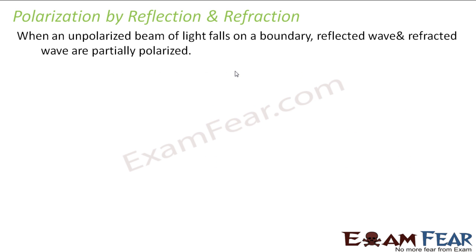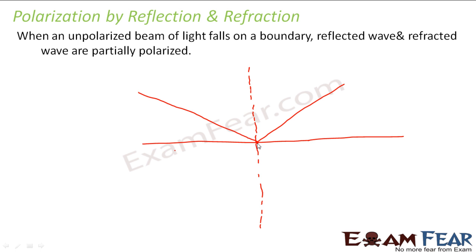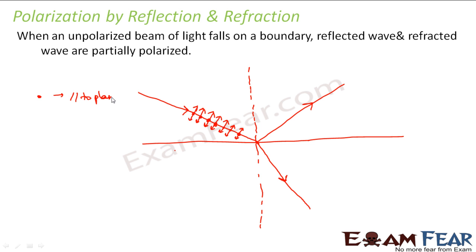Now we will look at polarization by reflection and refraction — how reflection and refraction polarize light. Let us suppose this is the boundary. This is my incident ray, this is the normal, this is my reflected ray, and this is my refracted ray. On the incident ray we have unpolarized light. Unpolarized light is denoted where the dot represents the plane perpendicular to the direction of the incident ray, and the line indicates the direction along the plane of the paper — parallel to the plane of the paper.